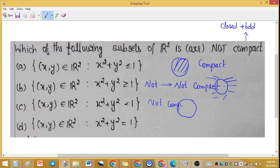Option D, x² + y² = 1, is a circle with radius 1. This is only the boundary points, neither interior nor exterior. We can call this a simple closed figure, which is compact.